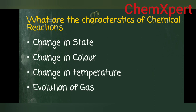Three marks question: What are the characteristics of a chemical reaction? From the two reactions — burning of magnesium ribbon and adding zinc granules into H₂SO₄ — the changes which indicate a chemical reaction has taken place are: first, change in state; second, change in colour (when two solutions mix and a coloured precipitate forms); third, change in temperature — reactions can be exothermic (heat released) or endothermic (heat absorbed); and fourth, evolution of gas.